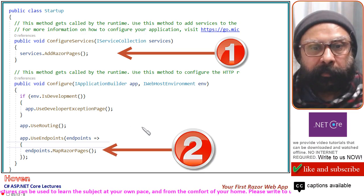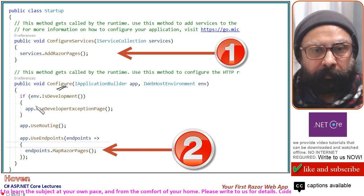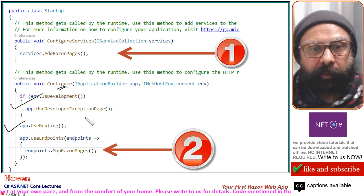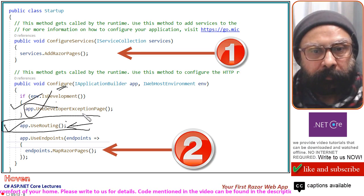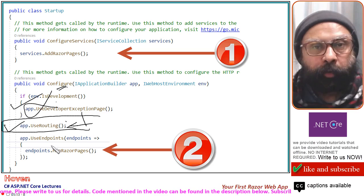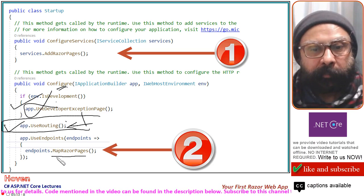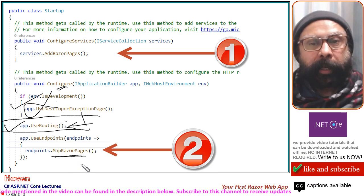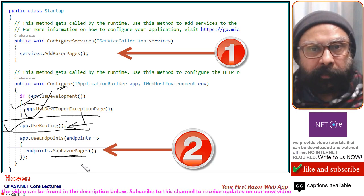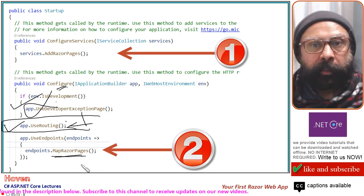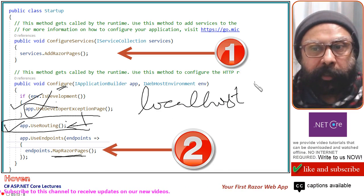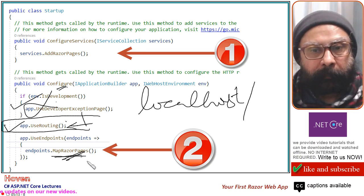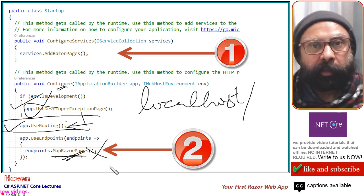The second thing is to come to the Configure method. In the UseEndpoints block, you will add MapRazorPages(). This adds Razor pages as the endpoint and ensures that the request for the index route reaches your index Razor page. If this is not there, the request will not reach your Razor page.